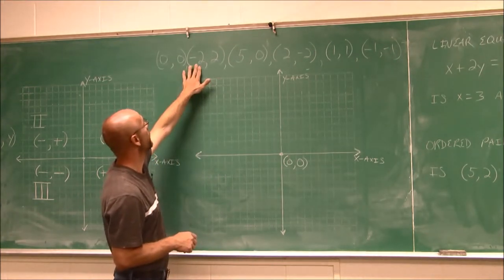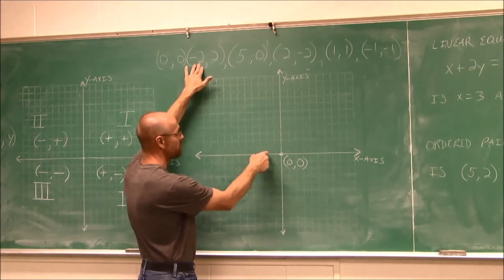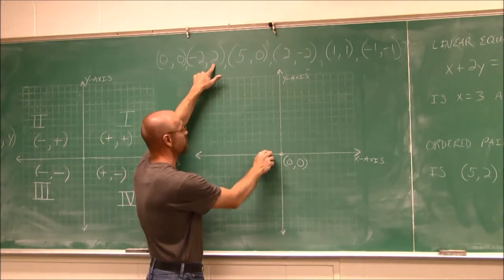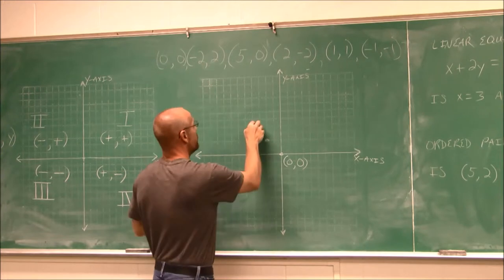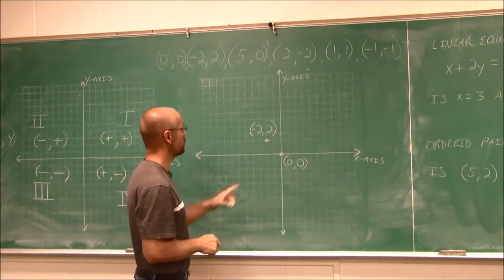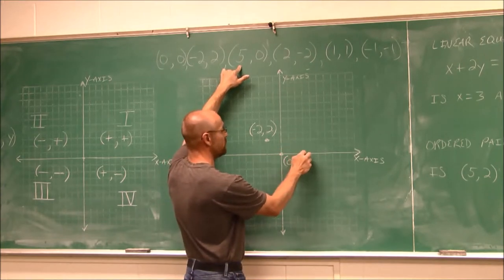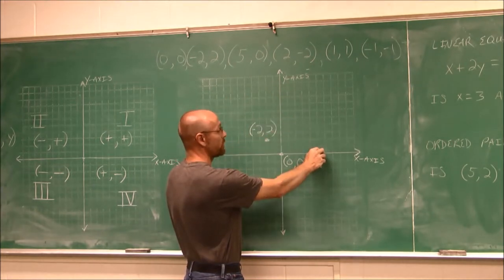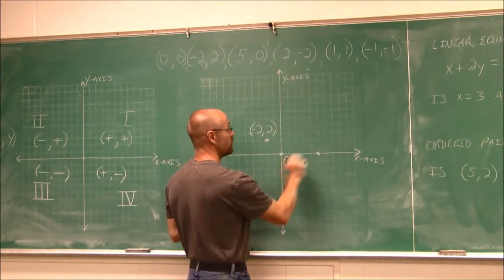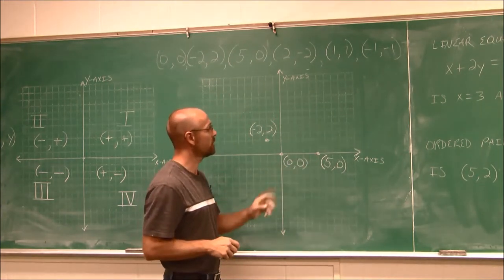Let's plot the point (-2, 2). My x value is negative 2, so I'm going to go to the left 2 spots, using each tick mark to represent 1 space. Then the y value is 2, so I go positive 2 up. I plot this point right here: negative 2 in x, positive 2 in y. The ordered pair is (-2, 2). The next value is (5, 0). X is 5, so I'm to the right of the origin 5 spaces. And 0 tells me I'm not going to go up or down — I stay right on the x-axis at the 0 value. I label that point (5, 0).